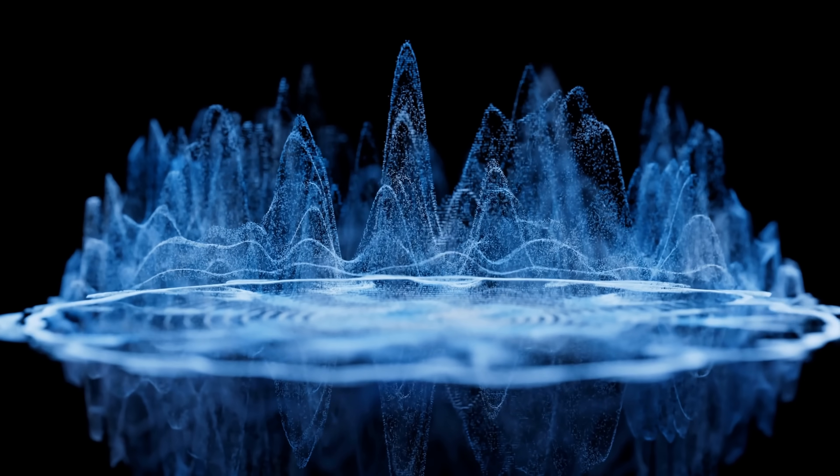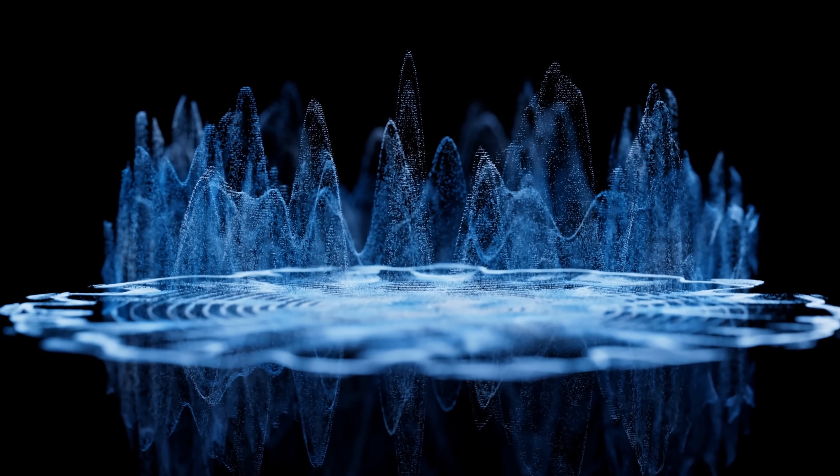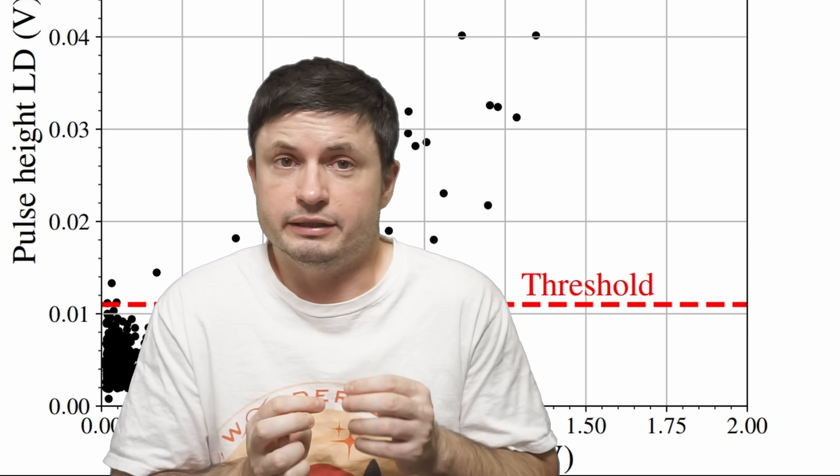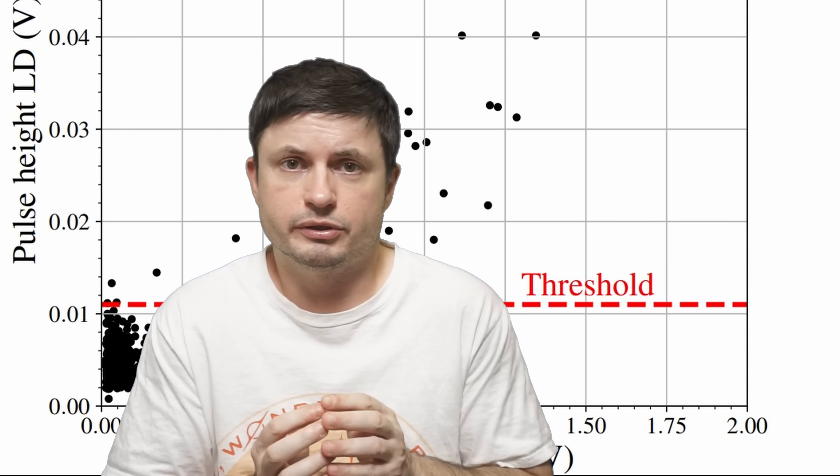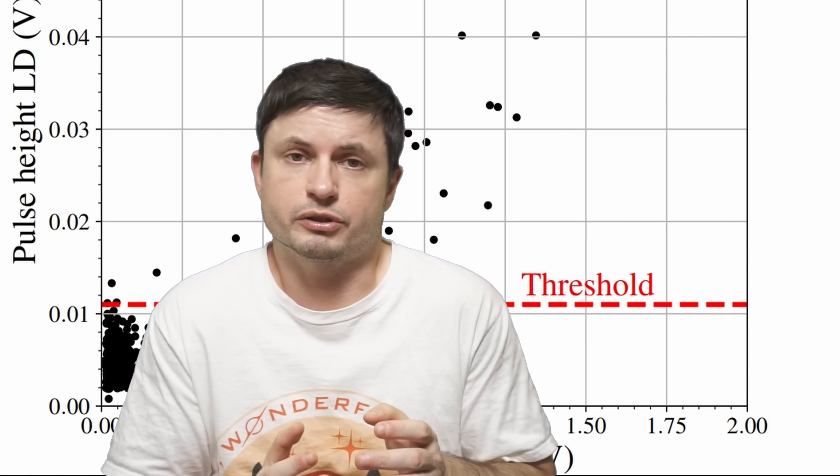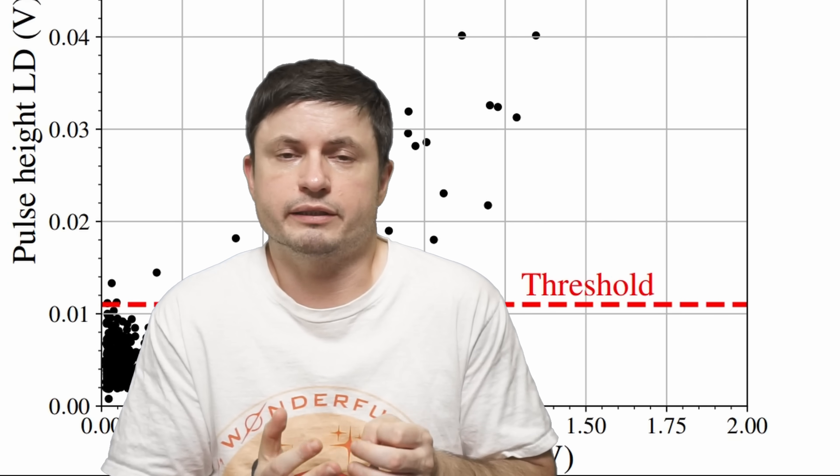But here we cannot claim this is dark matter yet. Because while they observed consistent signals with larger particles, since this was not underground or hidden away from radiation, this could have been from some kind of a cosmic ray or something else entirely. But I guess more importantly at this point they were not even trying to find these light dark matter particles because here this was just to test if this concept even works and if we can indeed use sugar to try to detect something out there.